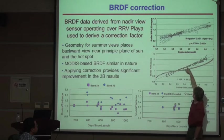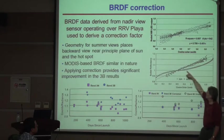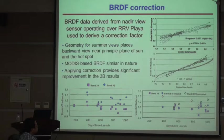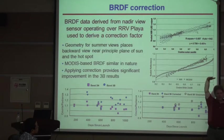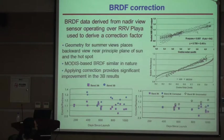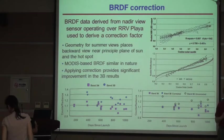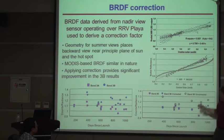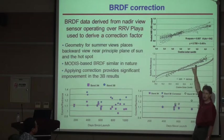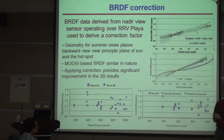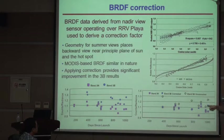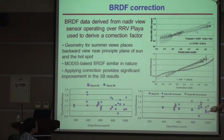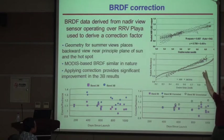I compared that to MODIS BRDF retrievals over several days at Railroad Valley, and the agreement was really good — despite comparing a top-of-atmosphere, 1-km scale measurement averaged over 32 days against a ground-level measurement over a small area. That gave me confidence in the model. When we applied that BRDF model to the 3B calibration data, the corrected results showed a significant improvement, though some residual BRDF remains that we'd probably eliminate with a better correction.